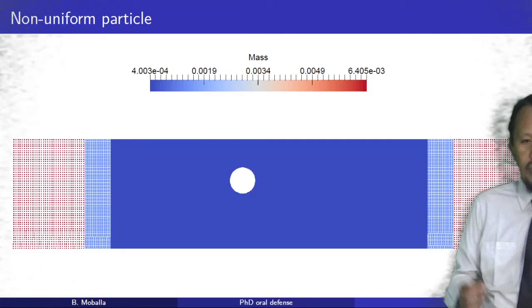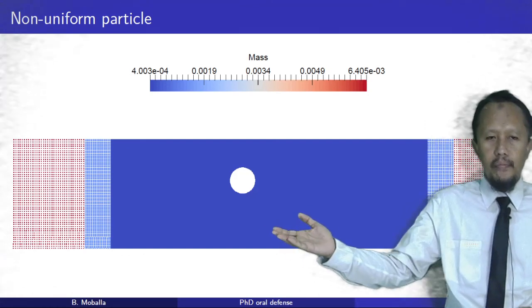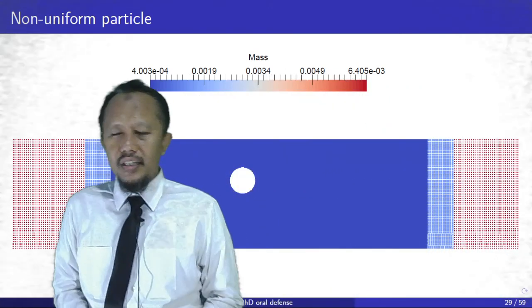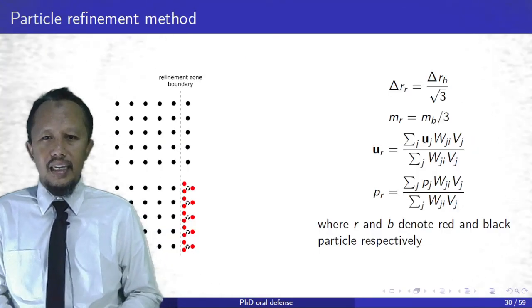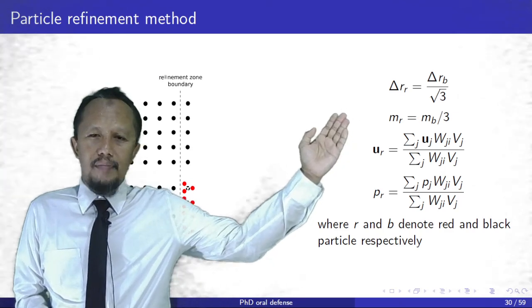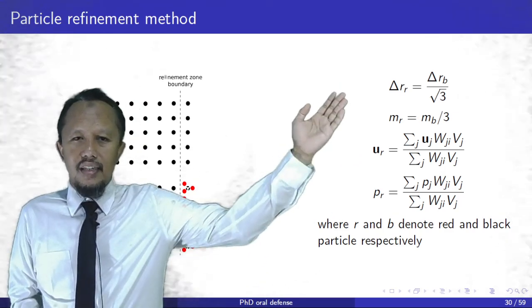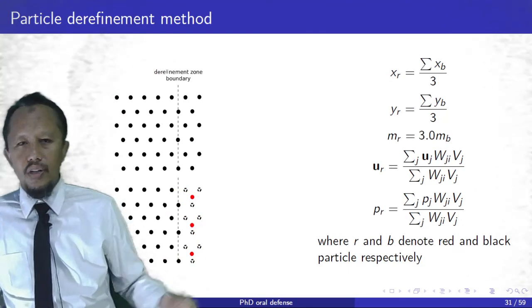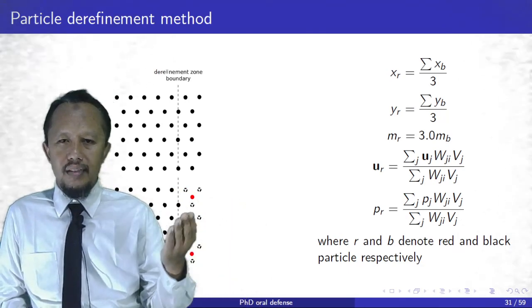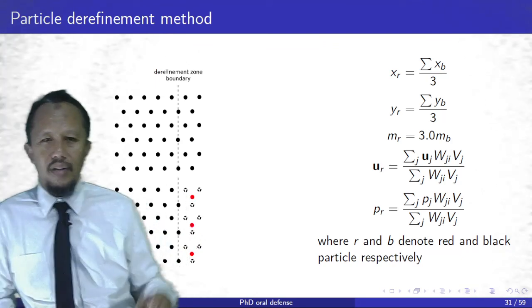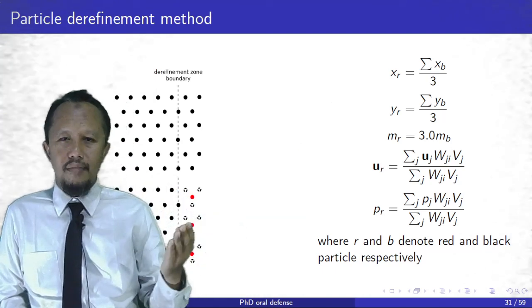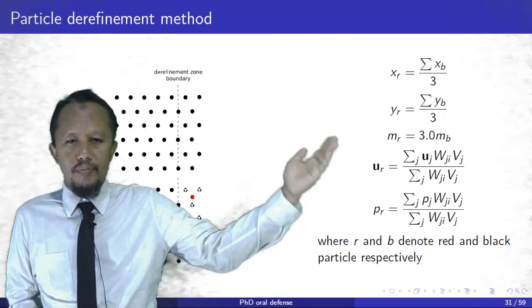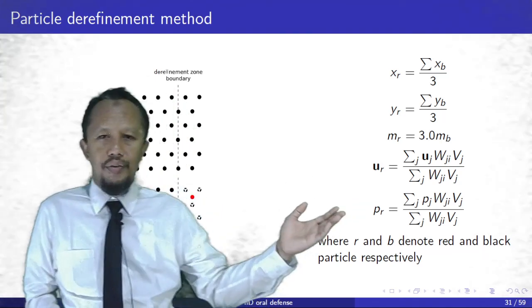In the present study, we use a non-uniform particle size — smaller particles near the cylinder and progressively larger particles farther away. A particle is split into three child particles; we then adjust the support radius and obtain the new velocity and pressure. In the derefinement region, three particles are joined into one child particle, whose position is at the centroid of the parent particles and whose mass is three times the mass of a parent particle. Velocity and pressure of the child particle are obtained in a similar way to the refinement method.